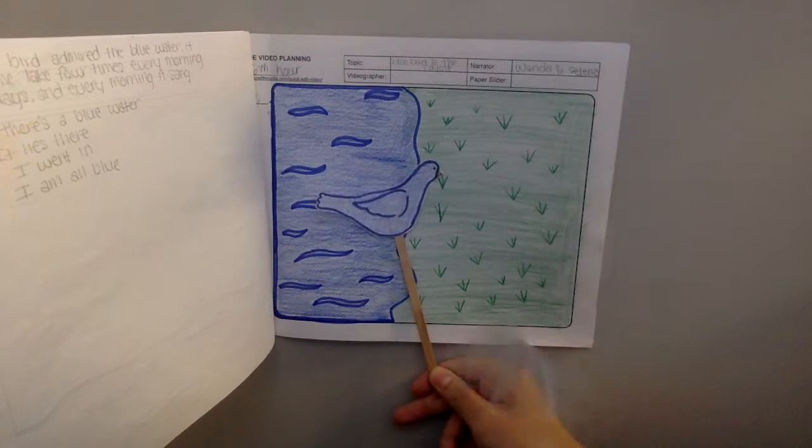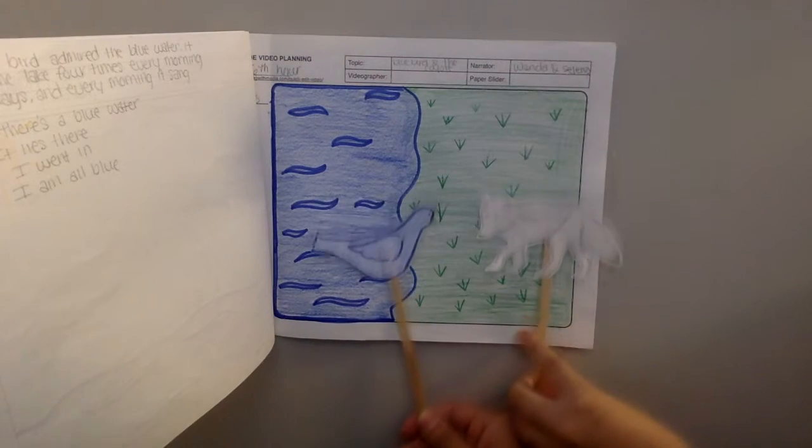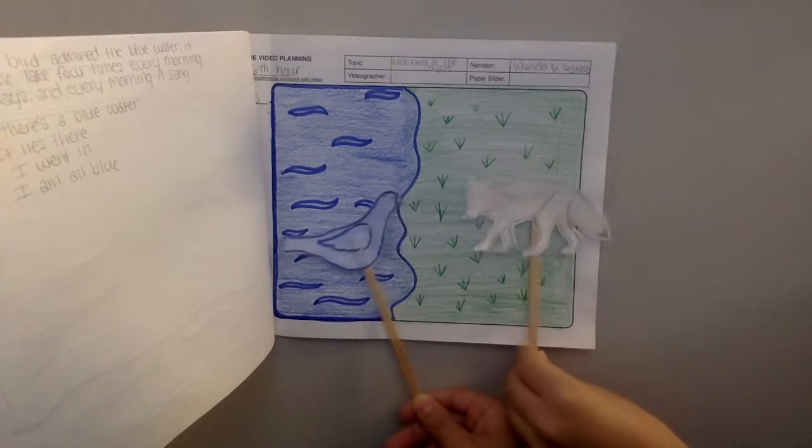All the while, Coyote had been watching the bird. He wanted to jump in and catch it for his dinner, but he was afraid of the blue water.